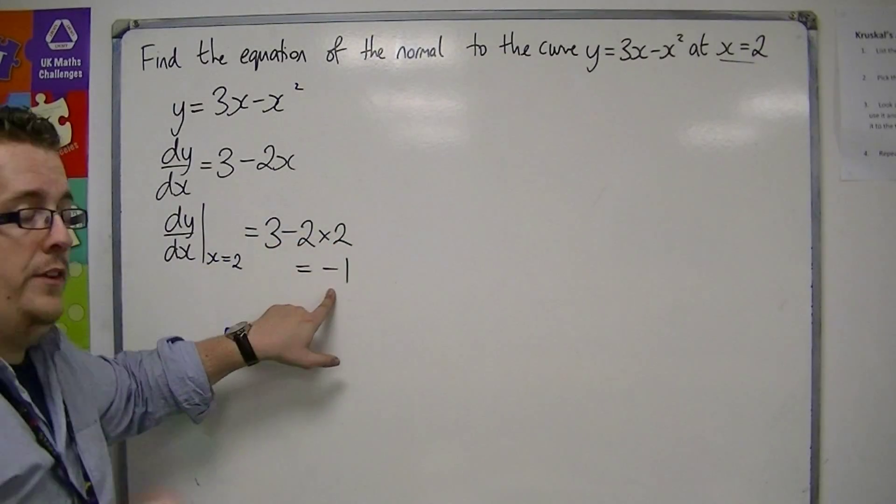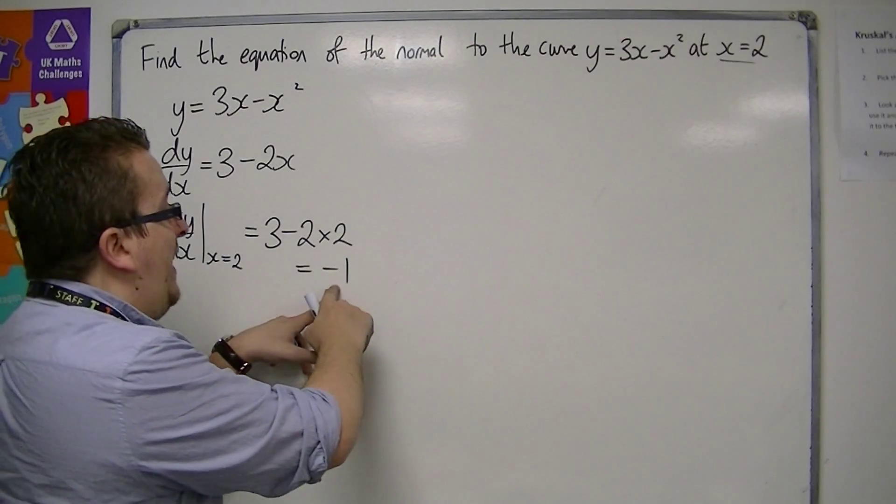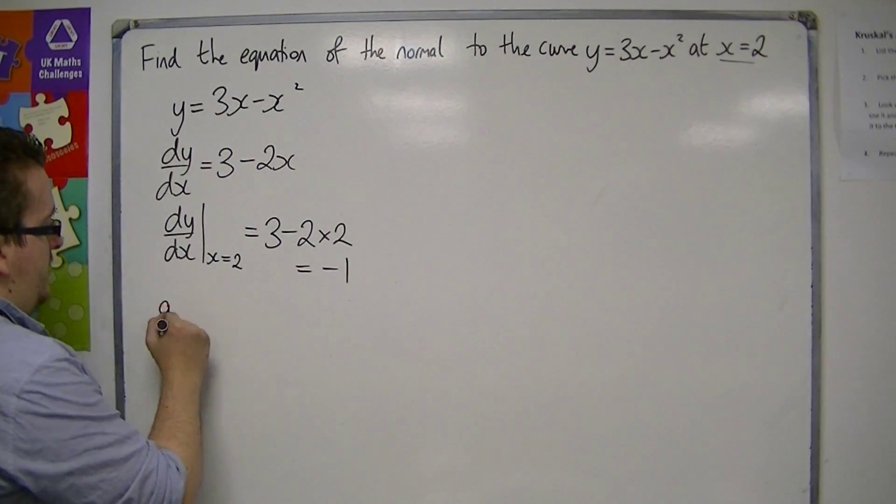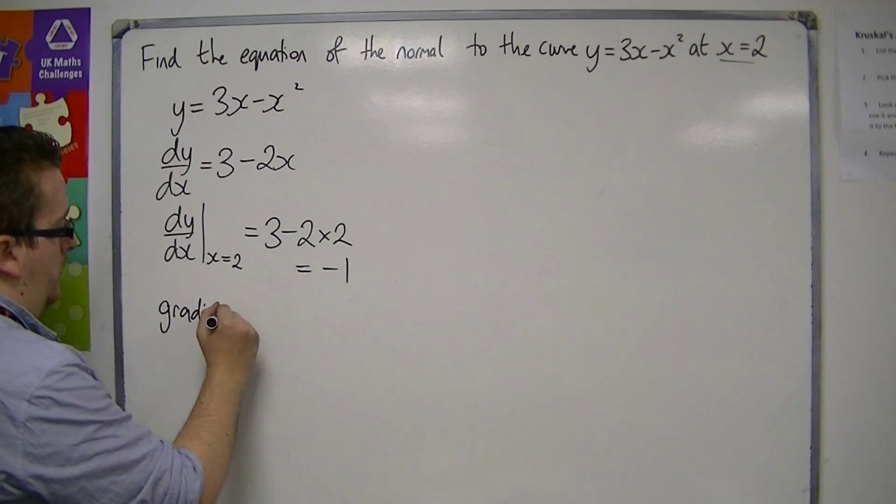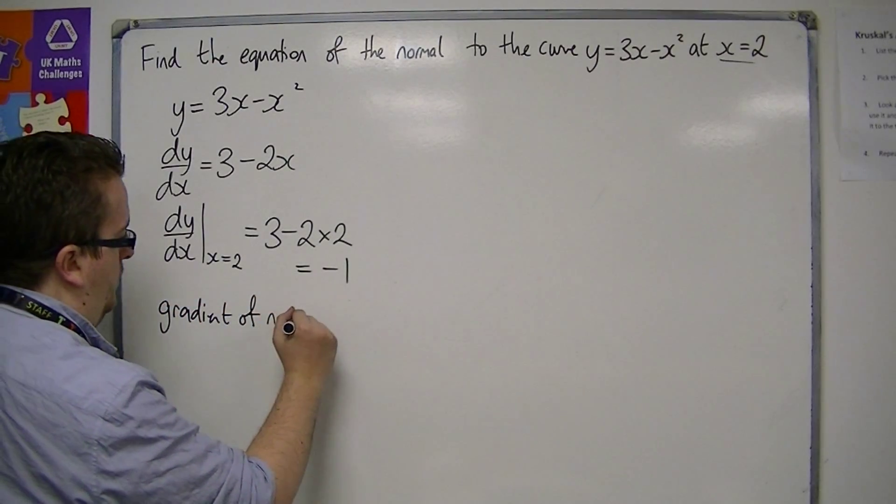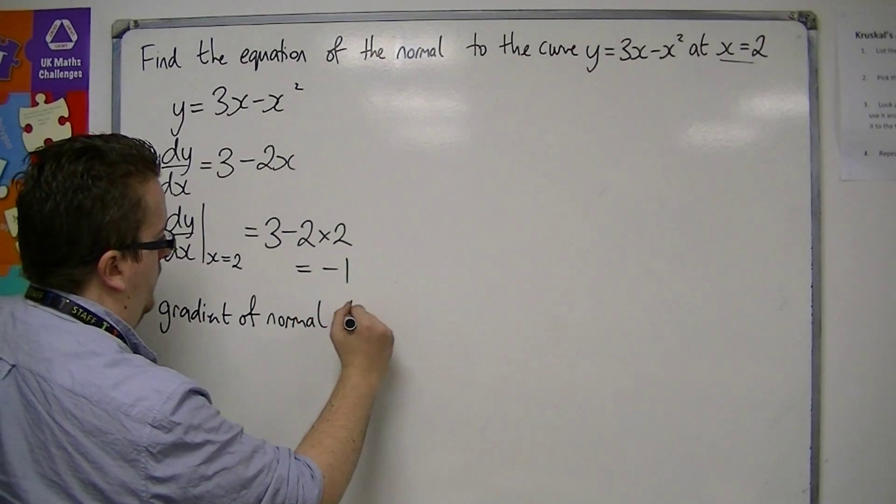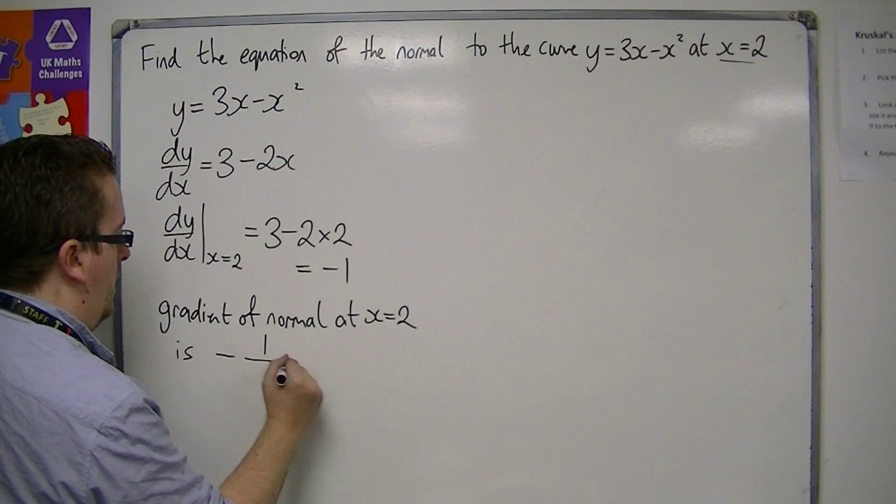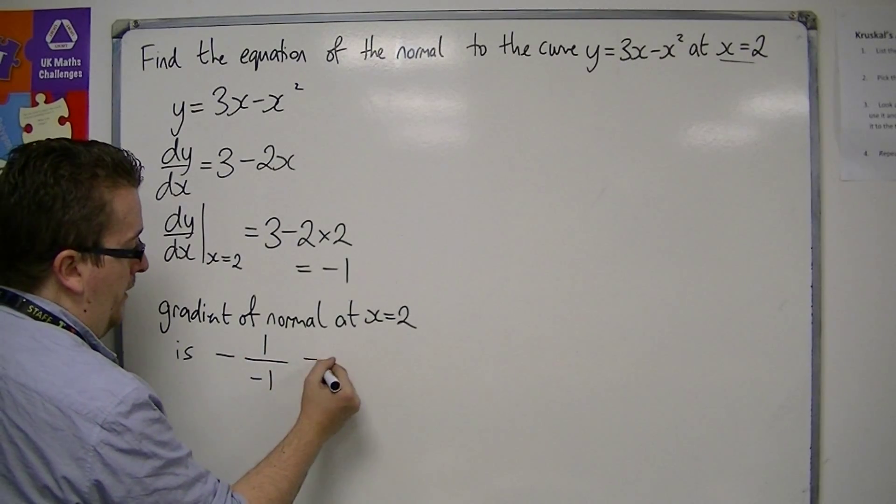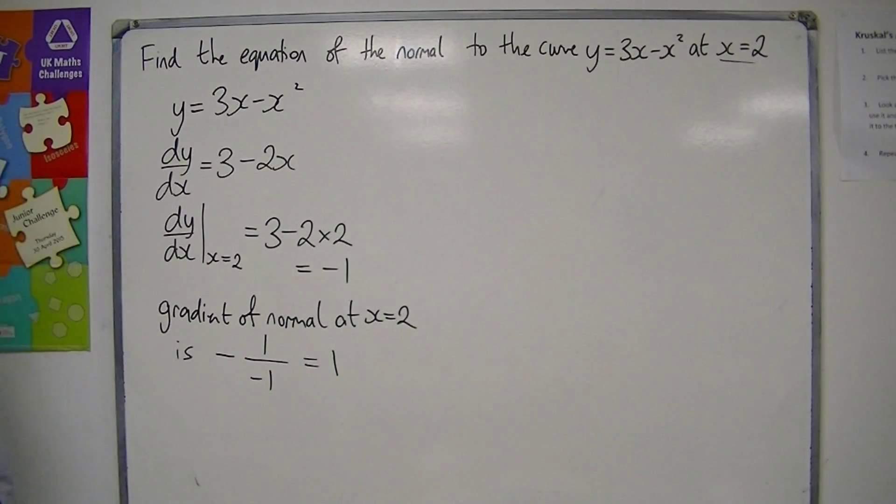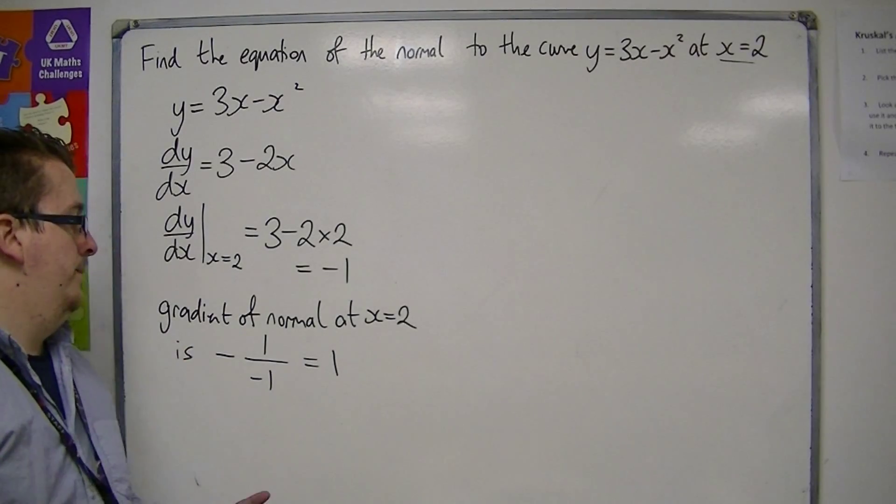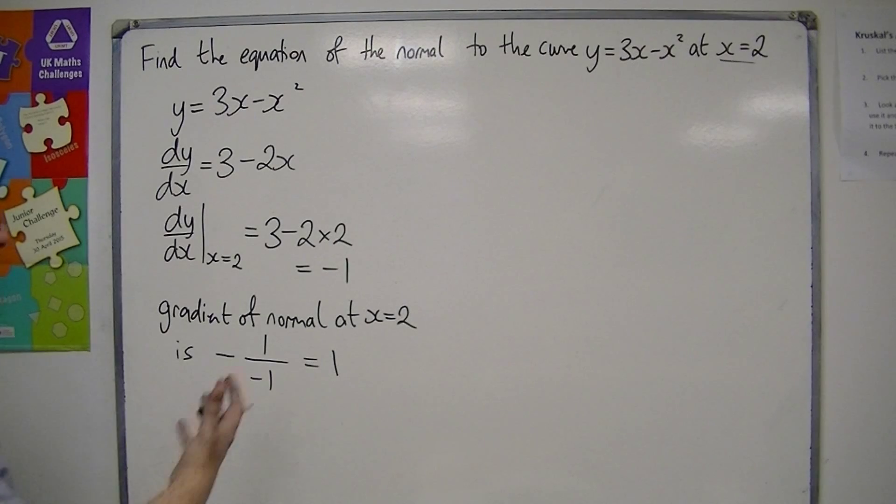So this is the gradient of the tangent at x equals 2. So the gradient of the normal at x equals 2 is minus 1 over that minus 1, which is just 1. So the gradient of the normal at x equals 2 is 1, the negative reciprocal of minus 1.